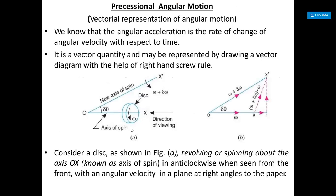Precession angular motion: we know that angular acceleration is the rate of change of angular velocity with respect to time. When angular velocity changes with respect to time, angular acceleration occurs. Precession angular motion is a vector quantity because if it changes direction, it is also called a change in velocity. The vector quantity may be represented by drawing a vector diagram with the help of the right-hand screw rule, which shows all three axes: the axis of spin, axis of gyroscopic couple, and axis of precession.